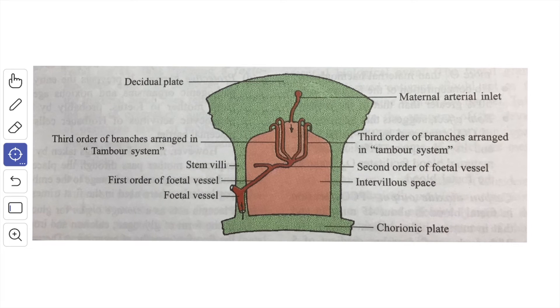Sometimes syncytial sprouts with fragments of nucleated cytoplasm are set free in the intervillus space and they are carried into the maternal circulation via the uterine vein and then may be deposited into the lungs of the mother, wherein they usually disappear by the phagocytic activity of the endothelial cells of the pulmonary capillaries.